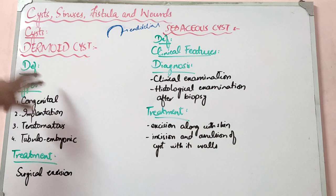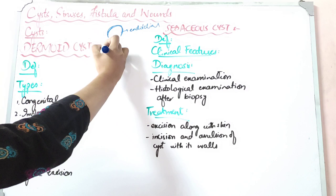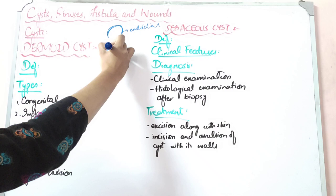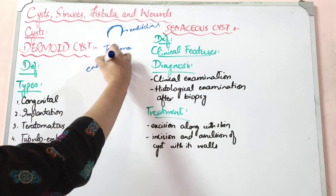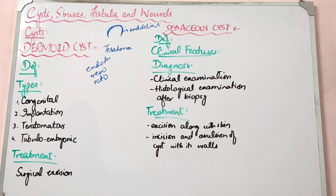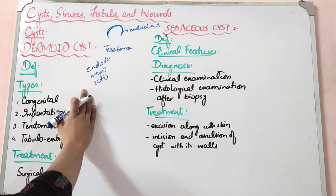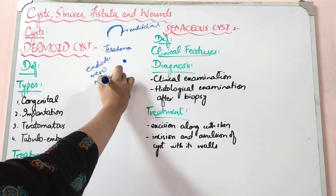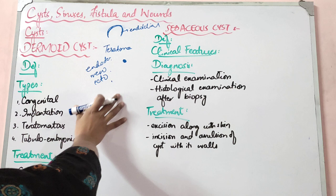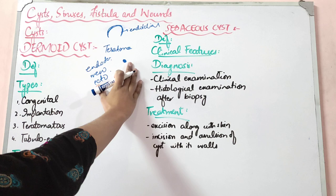First we study dermoid cysts. If you remember from gynaecology, dermoid cysts are benign ovarian cysts also called teratoma. In the ovaries, these cysts arise from totipotential cells. In embryonic life we have 3 layers — endoderm, mesoderm, and ectoderm — and any embryonic structure is made from these 3 layers. Cells that can produce all 3 layers are called totipotential cells.